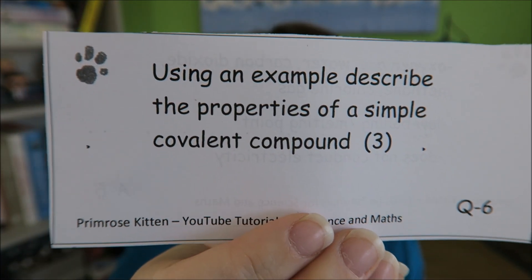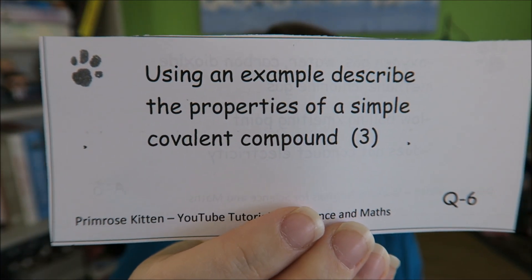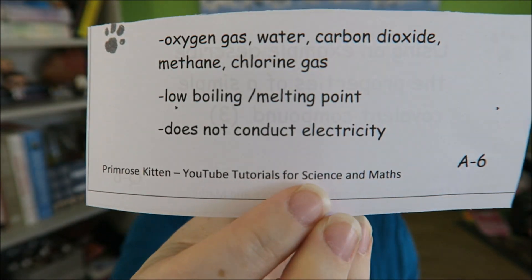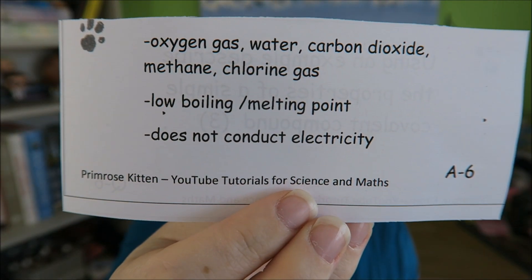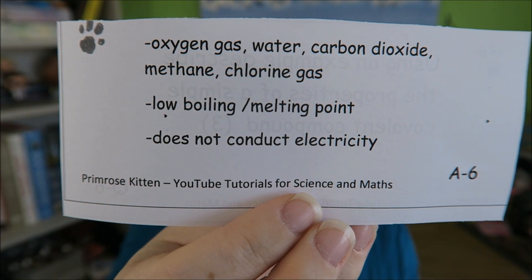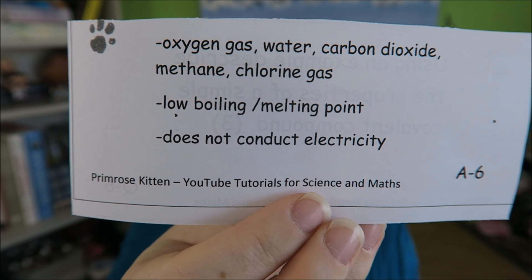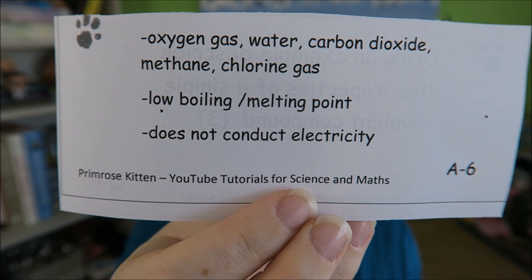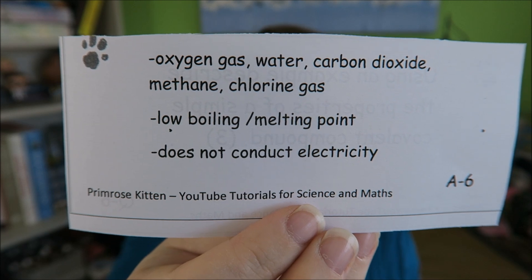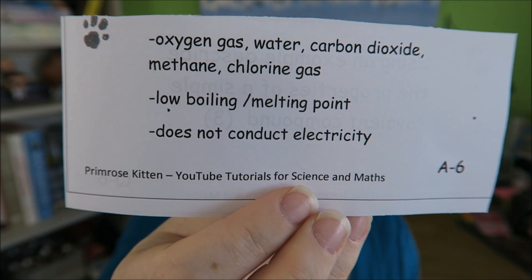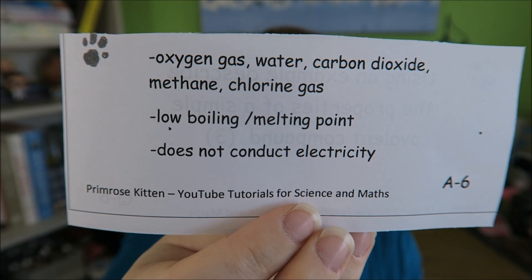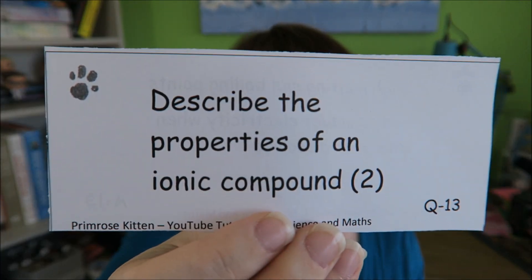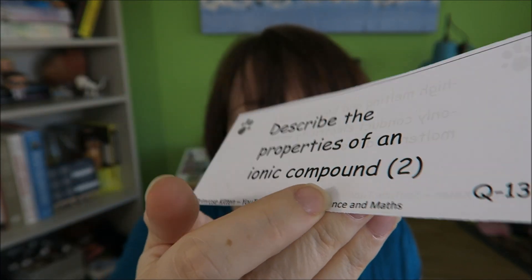Use an example to describe the properties of a simple covalent compound. The examples you need to know are oxygen, water, carbon dioxide, methane, chlorine gas, hydrochloric acid, and hydrogen gas. They have low boiling and melting points, and they do not conduct electricity.